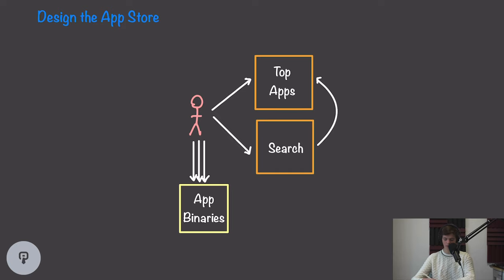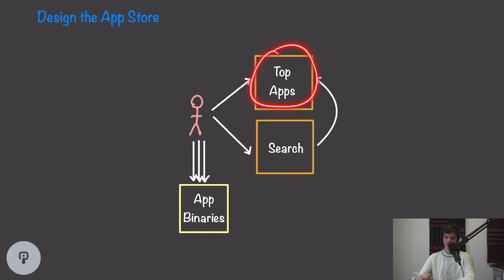In this video, we're going to be designing a performant and scalable system for Apple's App Store. This system is going to consist of three main pieces: a way for users to search for apps, a way to see top apps that have been searched for or downloaded, and a way to actually download app binaries onto someone's phone. Building a system like this that can scale poses significant challenges, and it's going to be really important to compensate for spikes in load and ensure we don't degrade performance for our users.